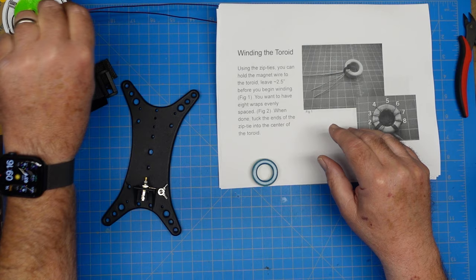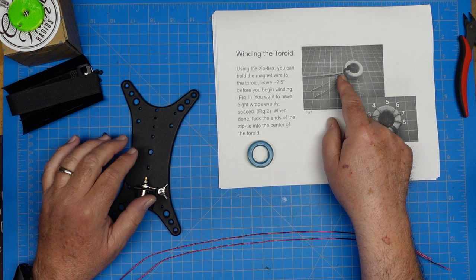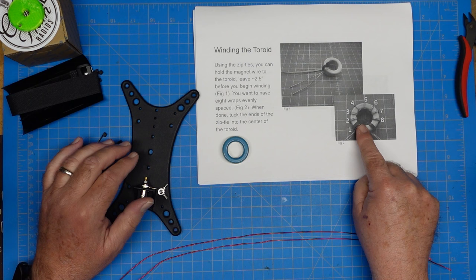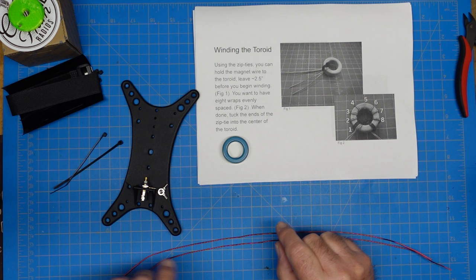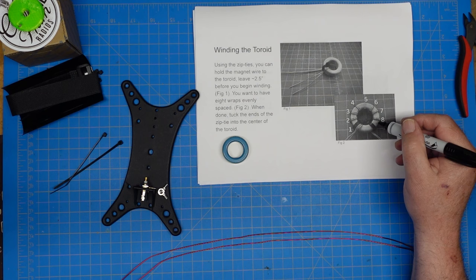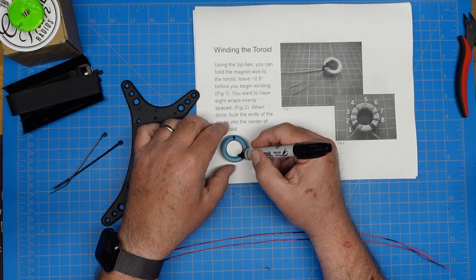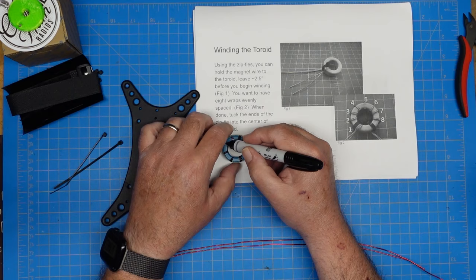The next piece is winding the toroid. We have our toroid and magnet wire. You're going to need a couple zip ties, which is why we included six. We're going to use the zip ties to hold the magnet wire to the toroid when we start our wrap. What we want to end up with is something similar to this picture. Use zip ties to hold this down and get it the way you want.